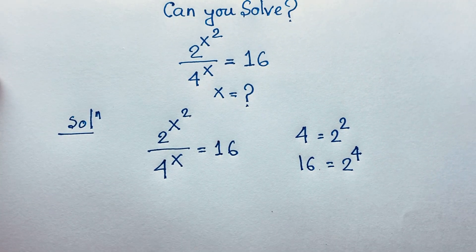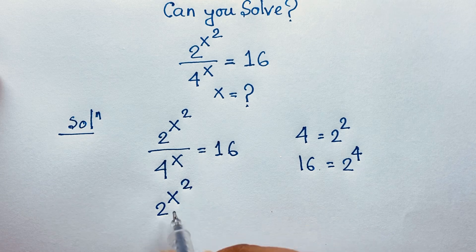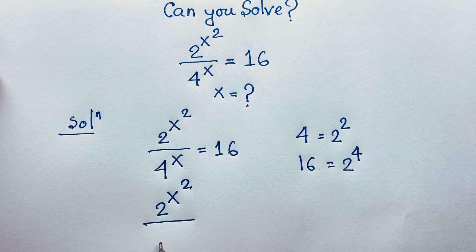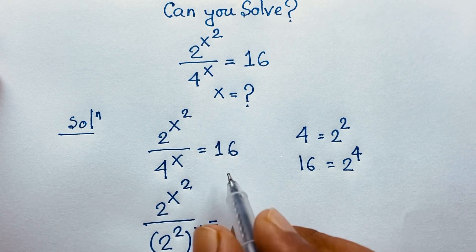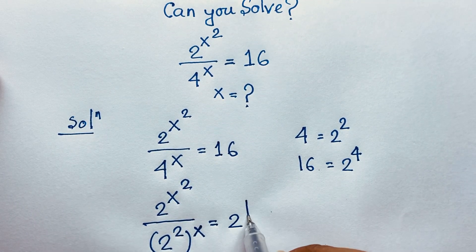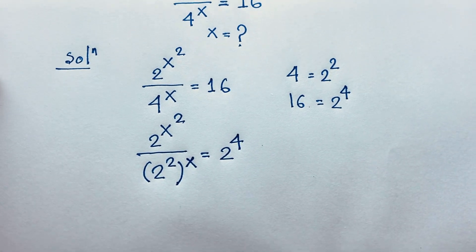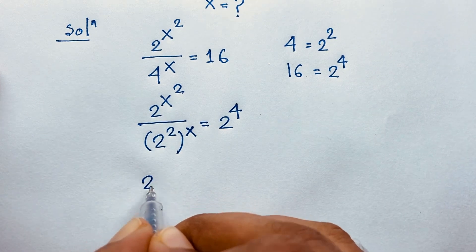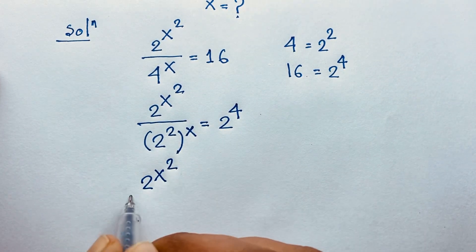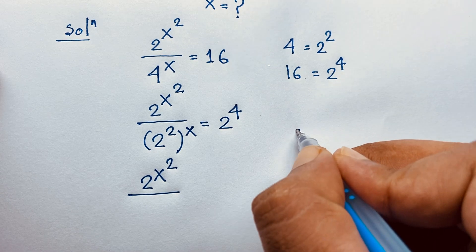Now at this moment, 2 to the power x squared over 4 — which is 2 to the power 2 — bracket power x, is equal to 16, which is 2 to the power 4. Then here we have 2 to the power x squared and 2 to the power 2x, so I can apply the exponential formula.